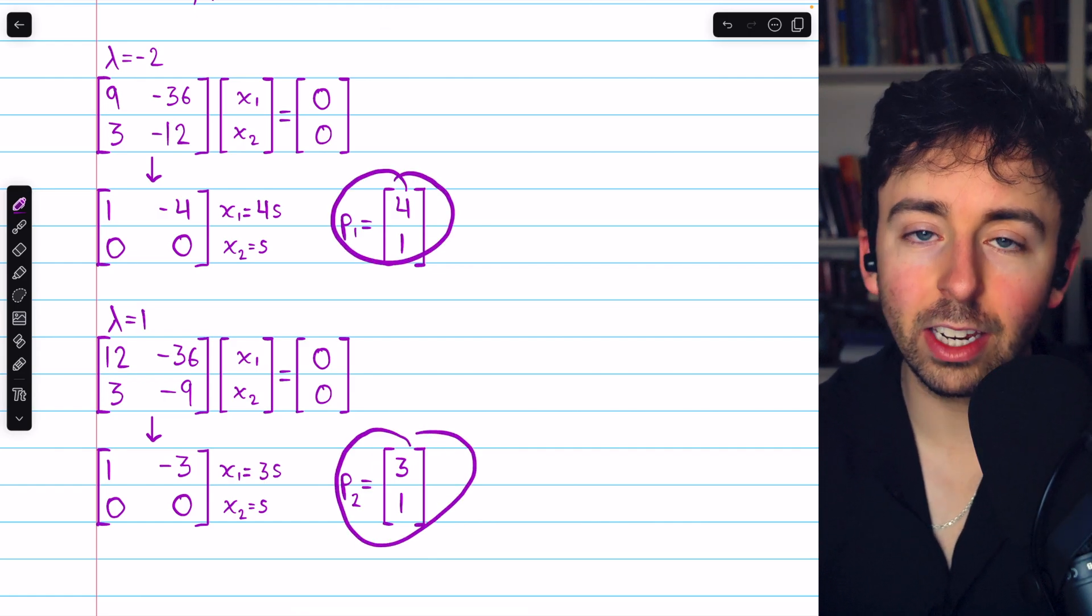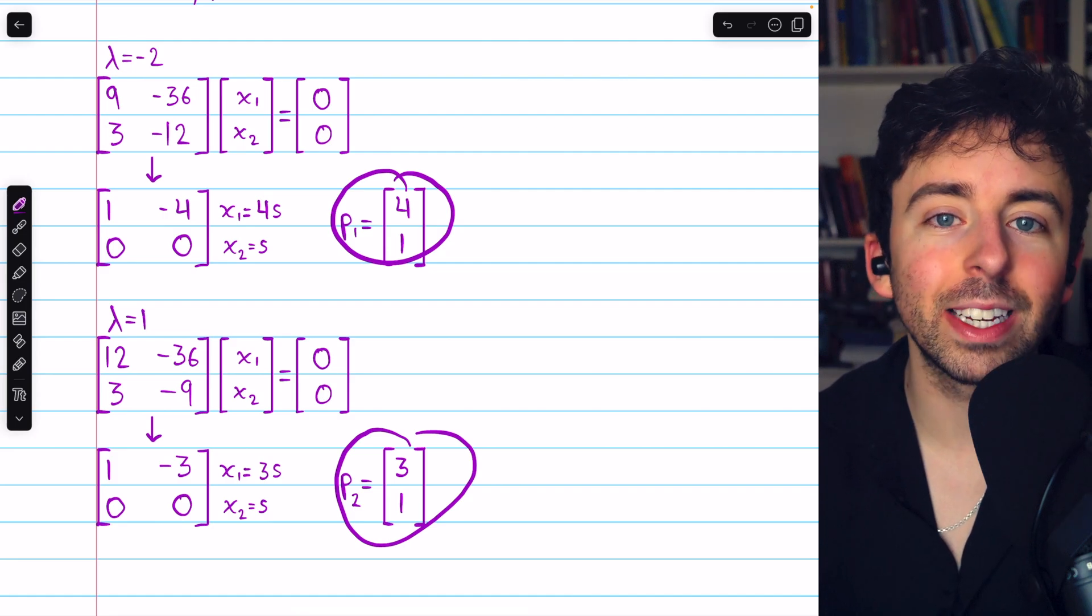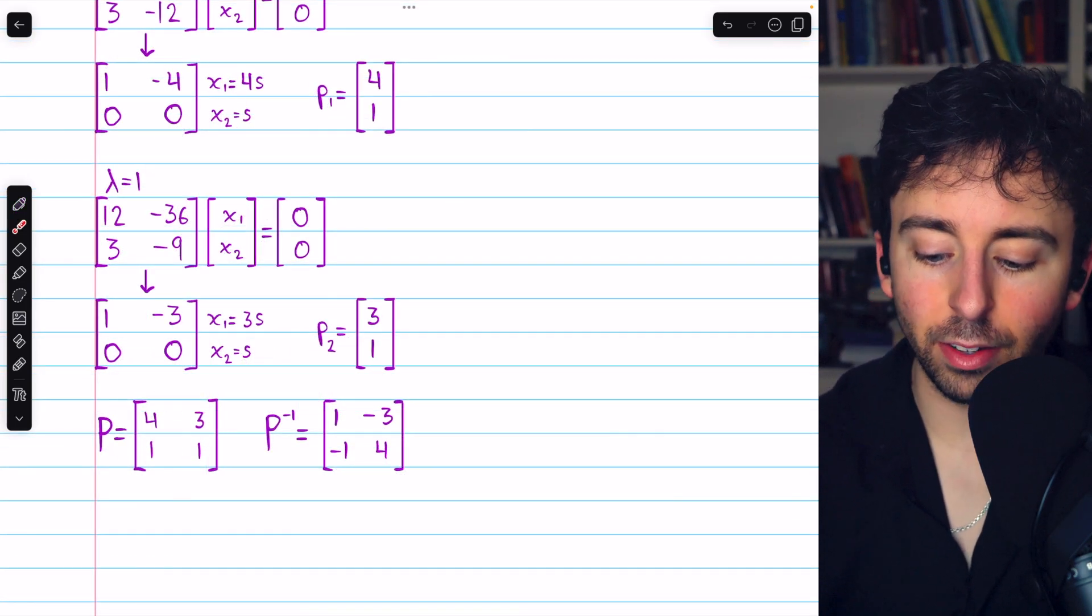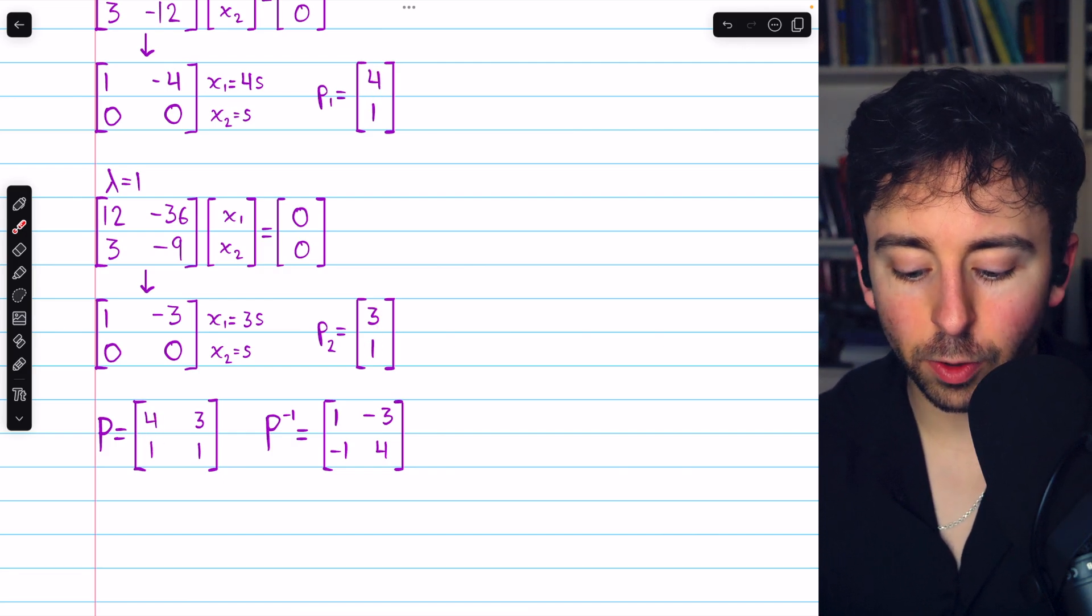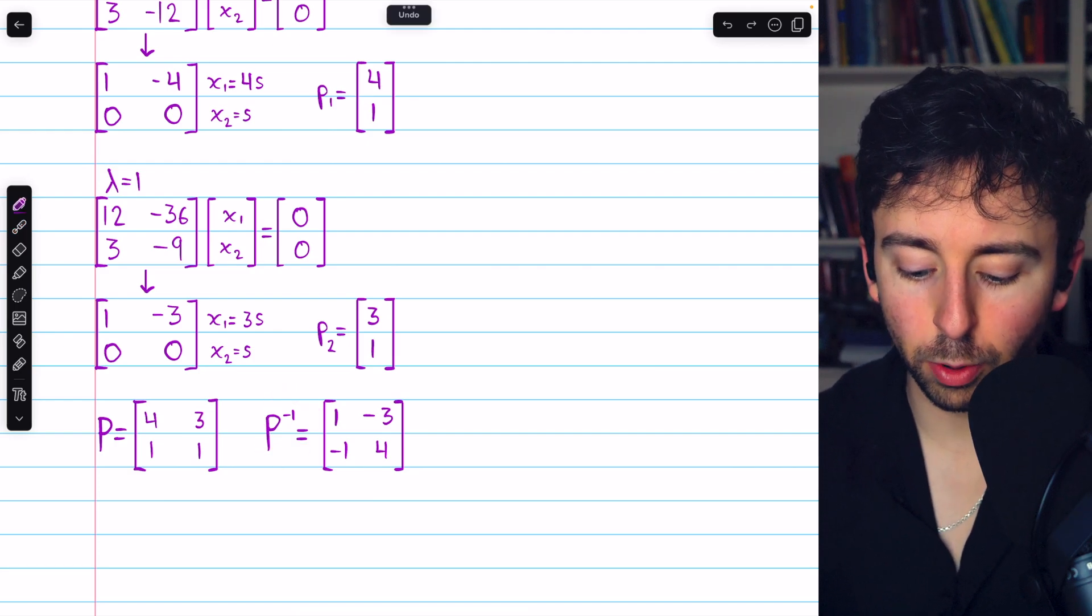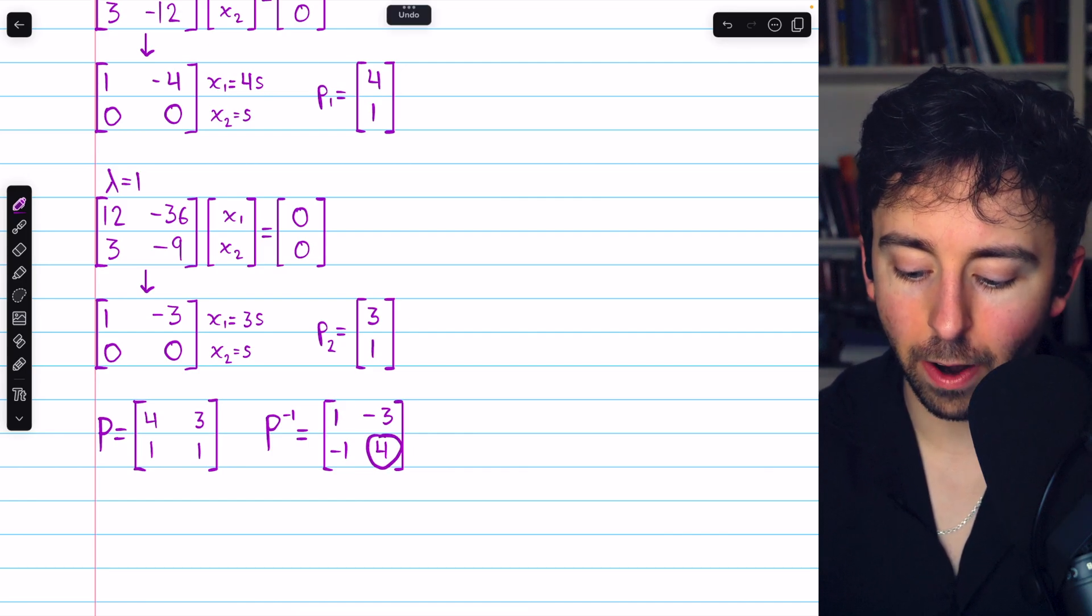These two linearly independent eigenvectors we can use to construct our diagonalizing matrix. Our diagonalizing matrix P has this first eigenvector as its first column, and this second eigenvector as its second column. We also need to find P inverse, which is pretty straightforward.